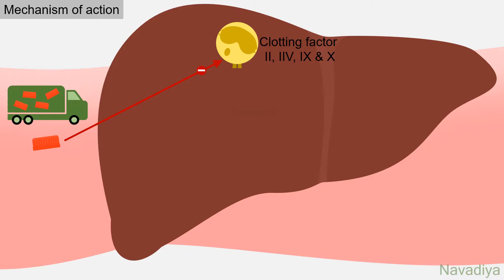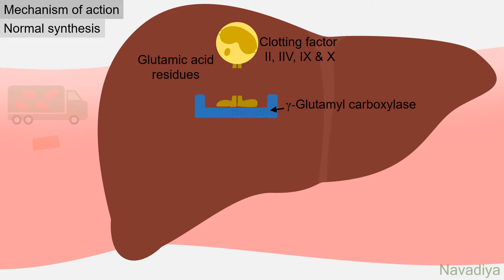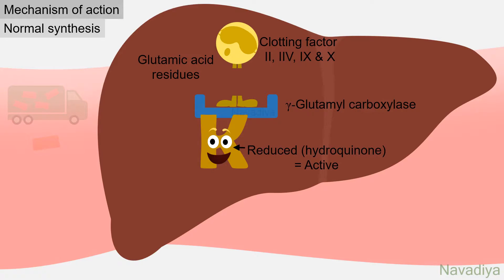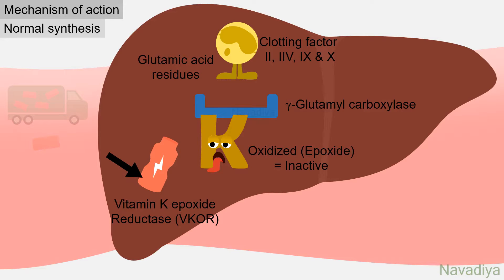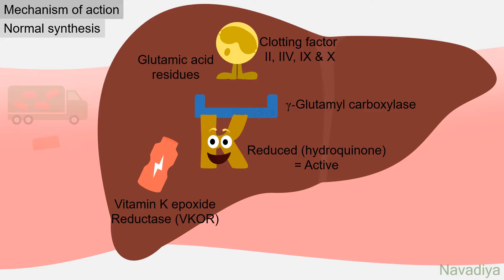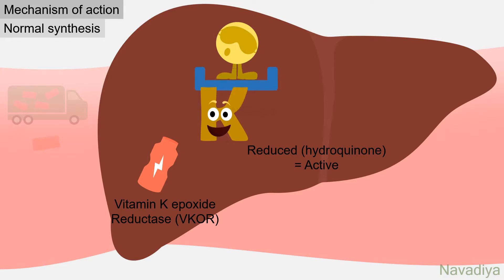To understand how this works, let's first see how these factors are synthesized normally. These clotting factors have glutamic acid residues, which need to be carboxylated for proper functioning. This carboxylation is carried out by the gamma glutamyl carboxylase enzyme and requires vitamin K. The reduced hydroquinone form of vitamin K serves as a co-factor. In the reaction, it is converted into the oxidized epoxide form, which is not active. To reactivate it, an enzyme called vitamin K epoxide reductase reduces it back to the hydroquinone form, and the cycle repeats.